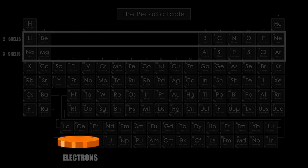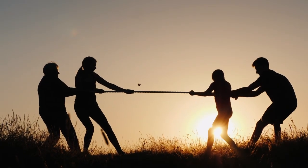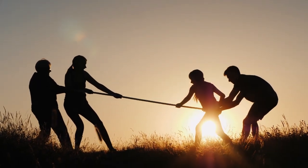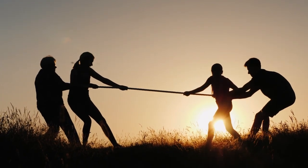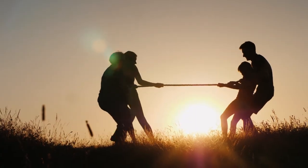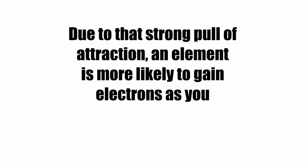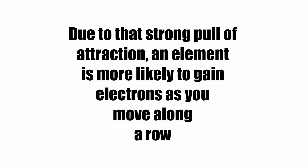The increase in electrons is mirrored by an increase in protons. In the tug-of-war between the pulling protons and the increasingly crowded electrons, the former wins, resulting in strong nuclear attraction pulling all of its shells closer. Due to that strong pull of attraction, an element is more likely to buy or gain electrons as you move along a row.